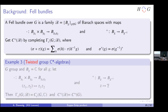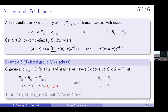One layer further: twisted group C*-algebras. Do the same thing — let the fibers be ℂ — but now assume a 2-cocycle. If you care about twisted group C*-algebras: change the Fell bundle's multiplication and involution by incorporating the 2-cocycle, and the resulting C*-algebra is the twisted group C*-algebra. So Fell bundle C*-algebras are more general than twisted group C*-algebras too.